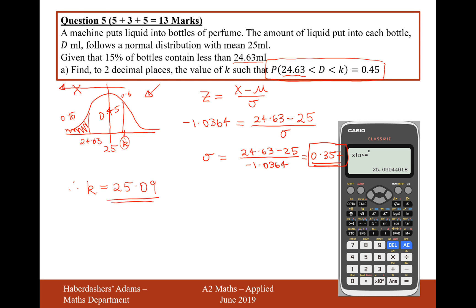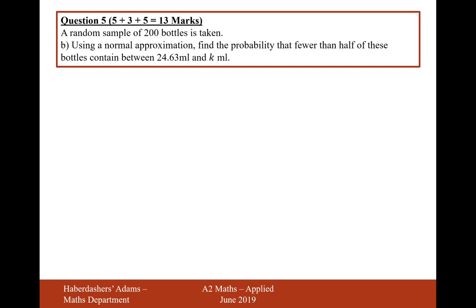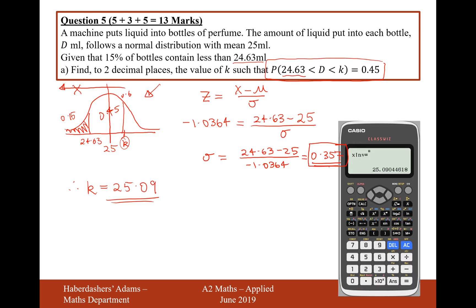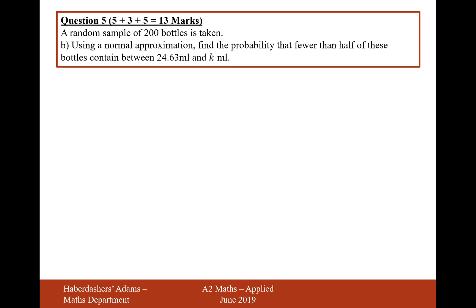So there we are, that's our answer for question A. Okay, so let's move on to question B then. A random sample of 200 bottles is taken. Using a normal approximation, find the probability that fewer than half of these bottles contain between 24.63 and k milliliters. Well, we know that the probability of a bottle being between 24.63 and k milliliters is 0.45.